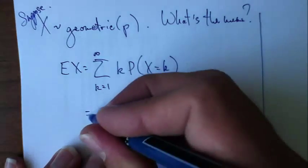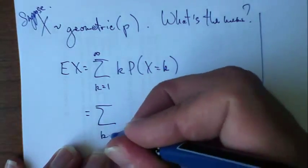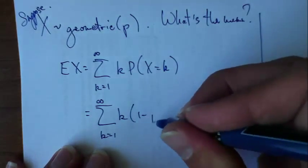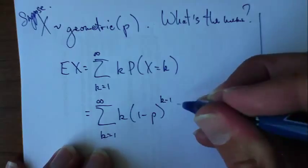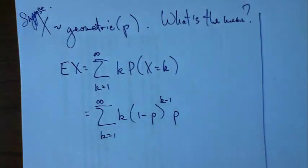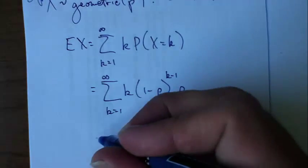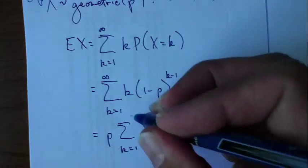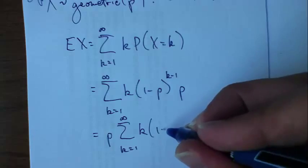Of course, since we have a geometric random variable there, I know exactly what that probability mass function is. It's 1 minus p to the k minus 1 times p. And that p is a constant, I can go ahead and pull that out of the summation sign, outside of the summation k times 1 minus p.